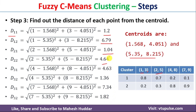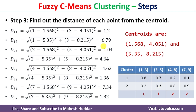Once we calculate these distances, d11 and d12 represent the distance of the first data point to the first and second cluster respectively. Between these two, 1.2 is the smallest, meaning the first data point is assigned to the first cluster. Similarly, for the second data point, 1.04 is smaller than 4.64, so it is assigned to the first cluster. The third data point's distance to the second centroid is smaller, so it is assigned to the second cluster. This gives us two clusters: cluster 1 contains (1,3) and (2,5); cluster 2 contains (4,8) and (7,9).